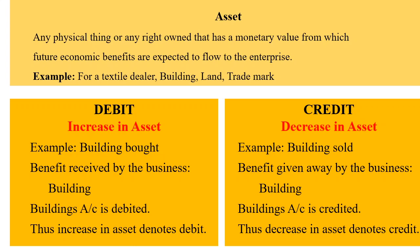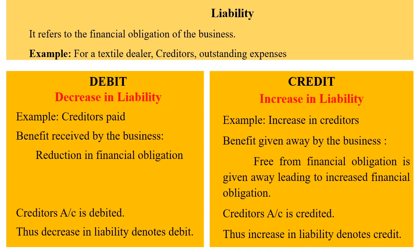Credit denotes decrease in asset. Example: building sold. The benefit given away by the business is the building, and so the building's account is credited. Thus, decrease in asset denotes credit.